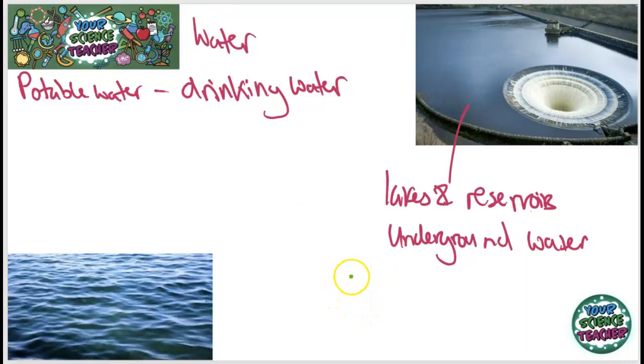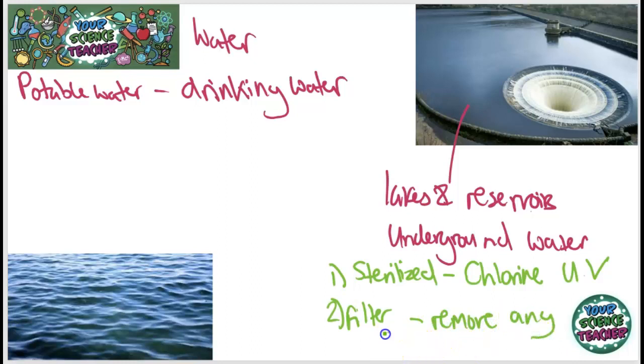We can therefore drink it or use it for going in the shower or washing our clothes - what treatments does it have to go under first? Well firstly it has to be sterilized. This basically means to kill any microorganisms that might be harmful in it, and we sterilize our water with chlorine and sometimes as well we also sterilize it with UV. This kills any harmful microorganisms that are in there. And we also filter - the reason why is to remove any solids that might be suspended in it.